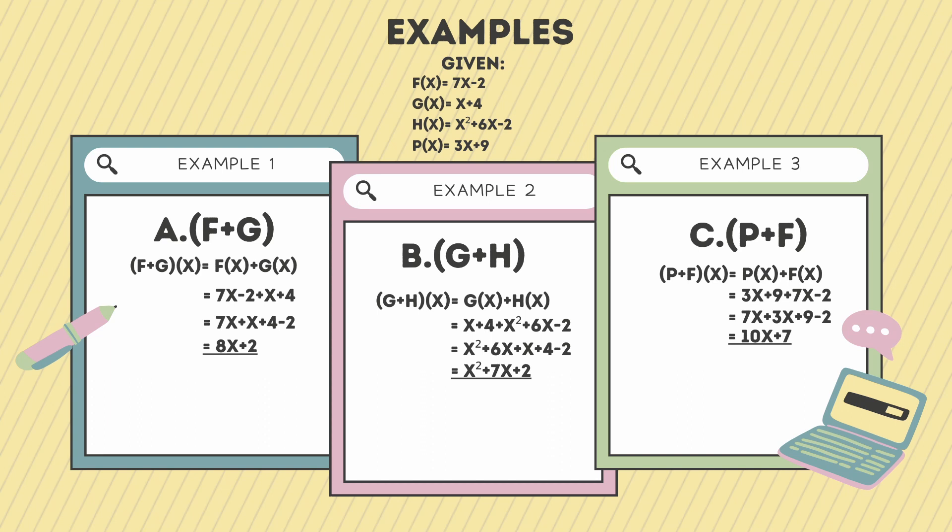Last but not the least, example 3: (p + f). (p + f)(x) = p(x) + f(x) = 3x + 9 + 7x − 2 = 7x + 3x + 9 − 2 = 10x + 7.